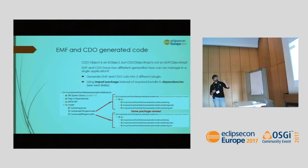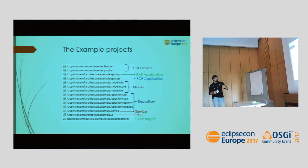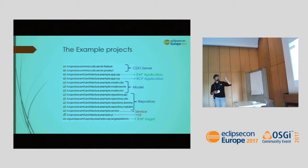The packages have the same name in both plugins. If you use import packages in your dependencies instead of required bundles, a consumer plugin becomes completely independent from the specific implementation — it only depends on the API. This is the list of plugins in the example: a couple for the CDO server, two for the RAP application (just empty launchers and startup plugins).